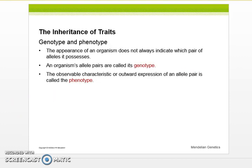So that brings us to genotype and phenotype. You really need to know the difference. Geno, genes, genetic code. It's those Ys, it's the alleles we were just talking about. Phenotype is phenophysical, that thing that we can see with our eyes. So the appearance of an organism does not always indicate which pair of alleles it possesses. An organism's allele pairs are called its genotype. The observable characteristic or outward expression of that pair is called a phenotype.